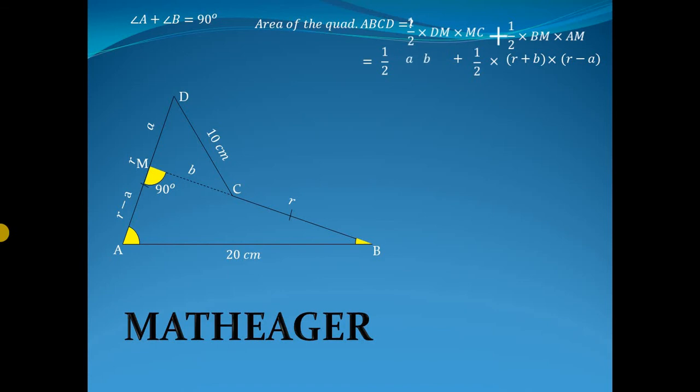This is half AB plus half, and we have to multiply r to r minus a, and the remaining b to r minus a. Now close this bracket.